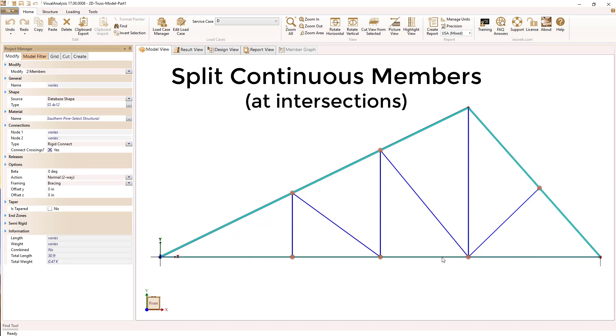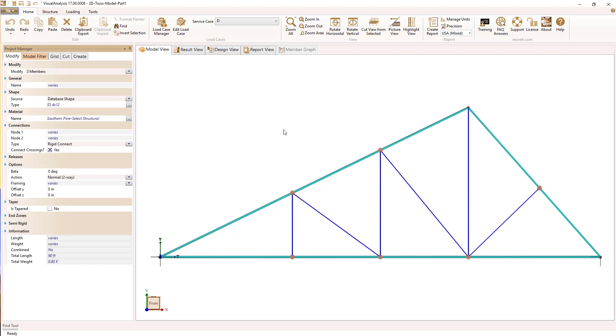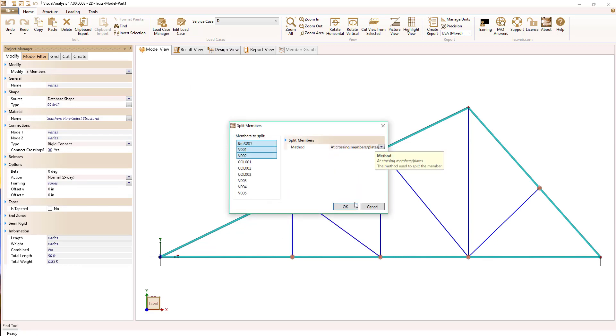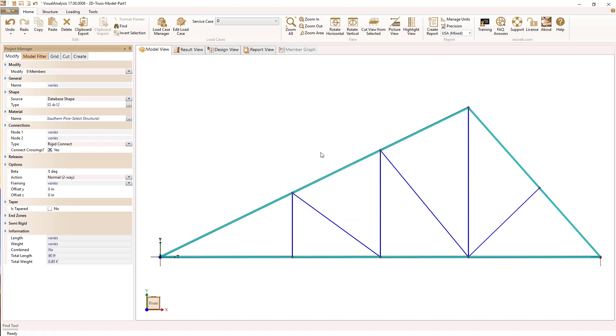In order to accomplish this, we need to split our continuous chords into pieces so that we can apply end releases at each end of each piece.